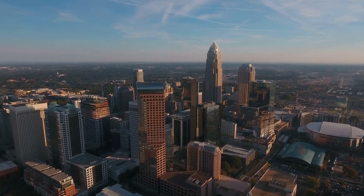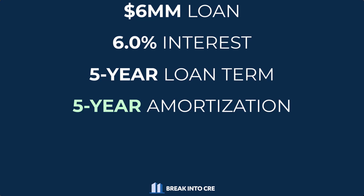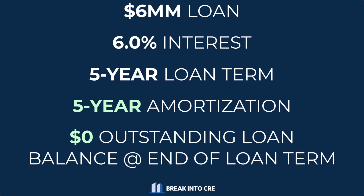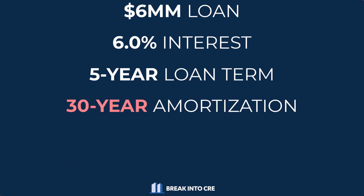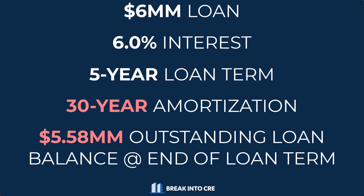With all of that said, even though a longer amortization period can be beneficial to both the lender and the borrower, this can also create issues because with a longer amortization period comes a bigger balloon payment at the end of that loan term. In the five-year amortization scenario where the monthly payment is highest, the outstanding loan balance at the end of the term is zero because those payments pay off the loan in full. But in the 30-year amortization scenario, over $5.5 million of loan proceeds remain at the end of the term and need to be paid off in one lump sum.